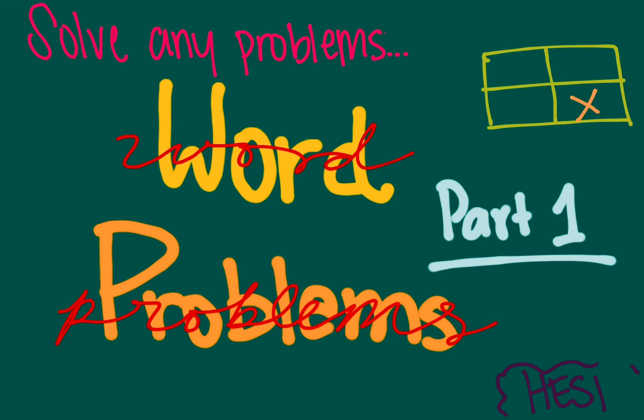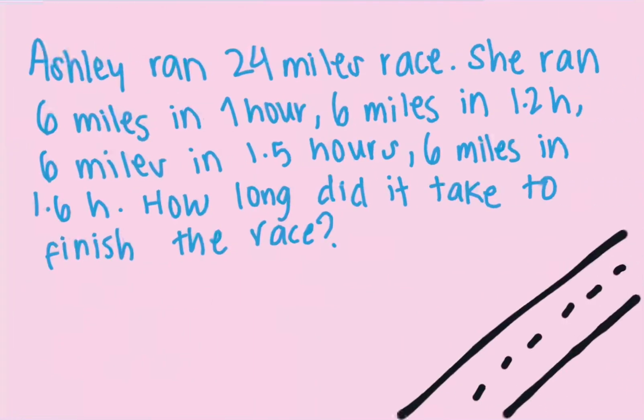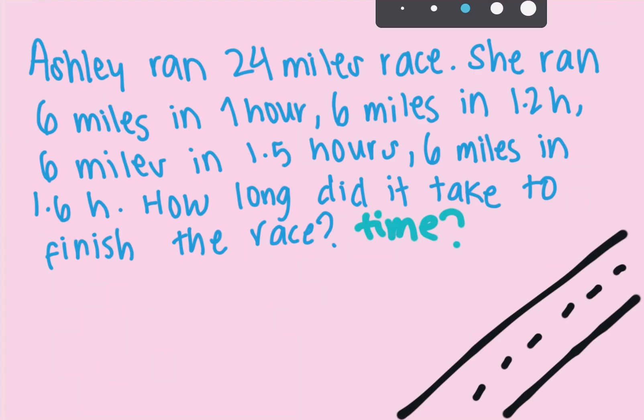The first question says: Ashley runs a 24-mile race. She ran six miles in one hour, six miles in 1.2 hours, six miles in 1.5 hours, and six miles in 1.6 hours. So how long did it take to finish the race? First of all, they're asking us about the time.